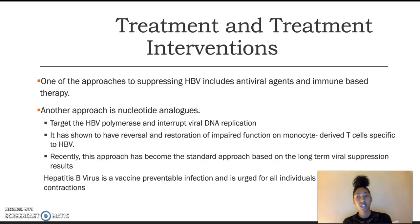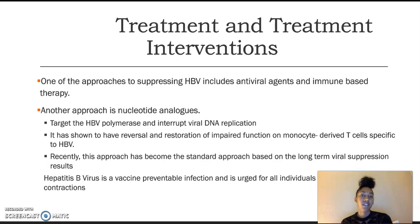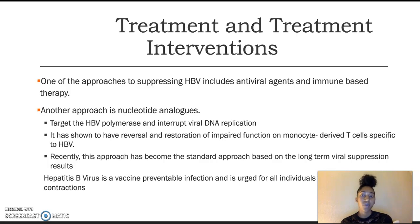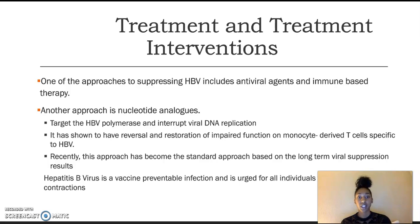Some treatment interventions: one approach to suppress hepatitis B virus includes antiviral agents and immune-based therapy. Ribavirin is one of the antiviral agents given for hepatitis B, and it is also given for other genotypes — hepatitis A, B, and C — though there are inhibitors specific to each virus that are usually paired with one another. Another approach is nucleotide analogs, which target the HBV polymerase and inhibit viral DNA replication. This is shown to have reversal and restoration of impaired function on monocyte-derived T-cells specific to HBV.